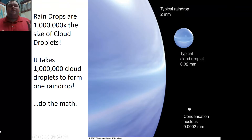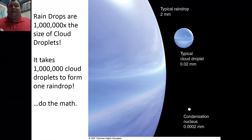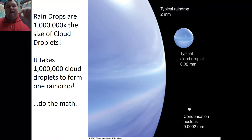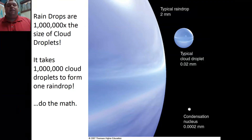Before we can really talk about types of precipitation we need to talk about how precipitation forms. Precipitation can't form the same way that a typical cloud droplet can form. Here's why: one average raindrop is approximately 1 million times the size of a cloud droplet. Think about that — 1 million times. So in order to go from a cloud droplet to a raindrop would take 1 million times the length it takes for one cloud droplet to form.